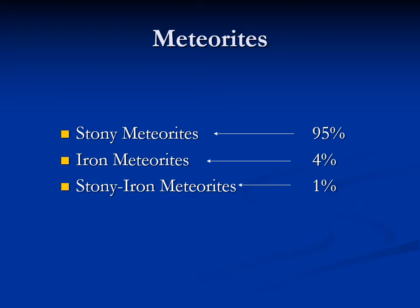The vast majority of meteorites are what we call stony meteorites — basically just chunks of rock. Iron meteorites make up about 4% or 5%, and as the name implies, they are mostly iron. And then there's about 1% of rocks that are a combination of both.